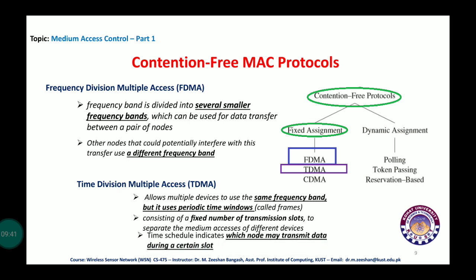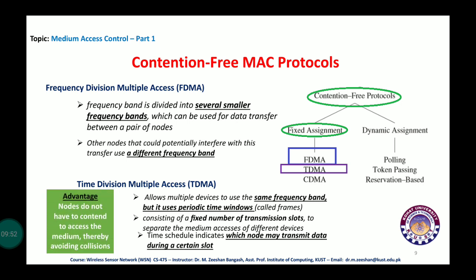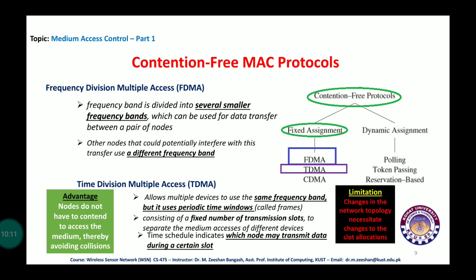A scheduler assigns each node a particular time slot for data transmission, so there is no contention — collision is automatically avoided. However, a limitation is that topological changes require rescheduling. In wireless sensor networks, where topology changes more frequently in an uncontrolled environment, this limitation has a significant impact.